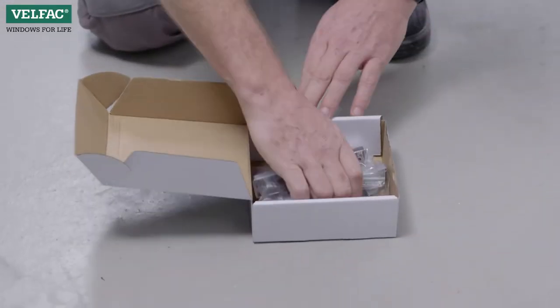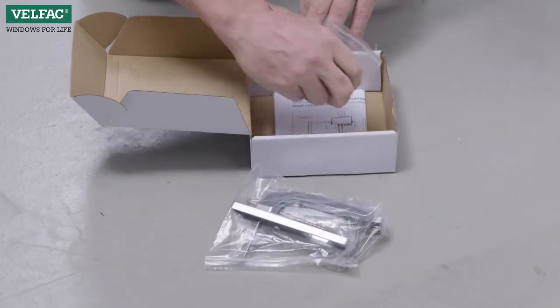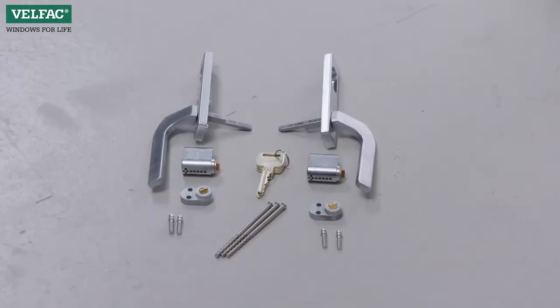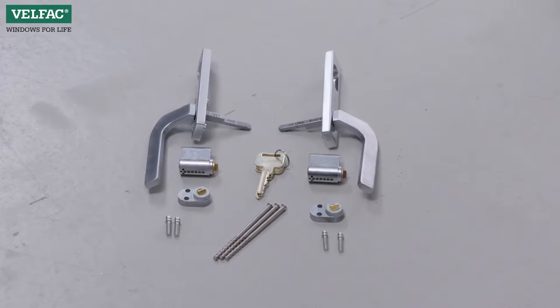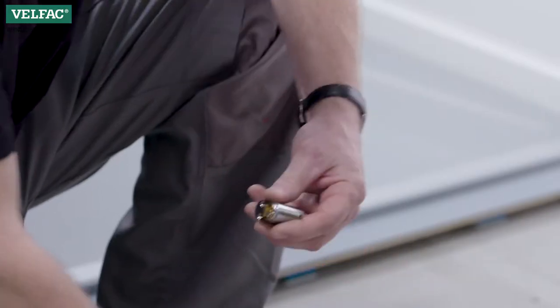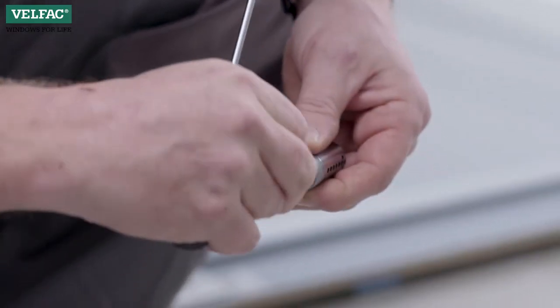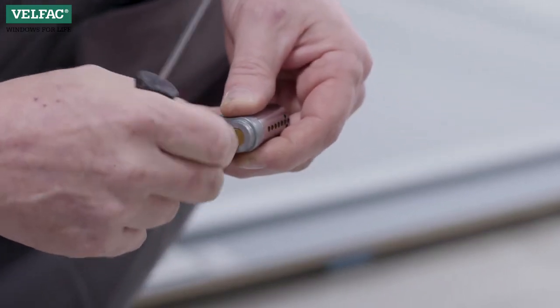Handles and cylinders are in a box supplied with the door. First, assemble the two cylinders and extensions with the enclosed screws.